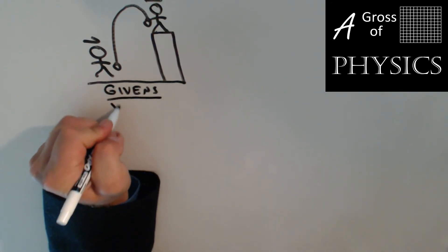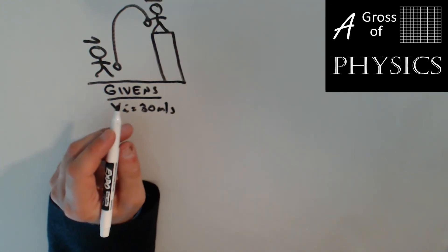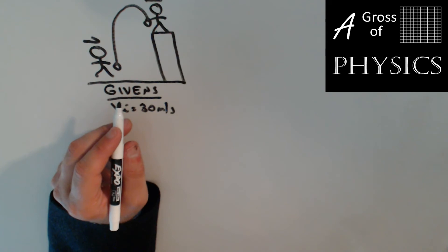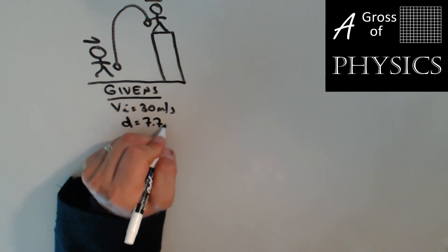So Vi is 30 meters per second and lands 7.7 meters above the ground.